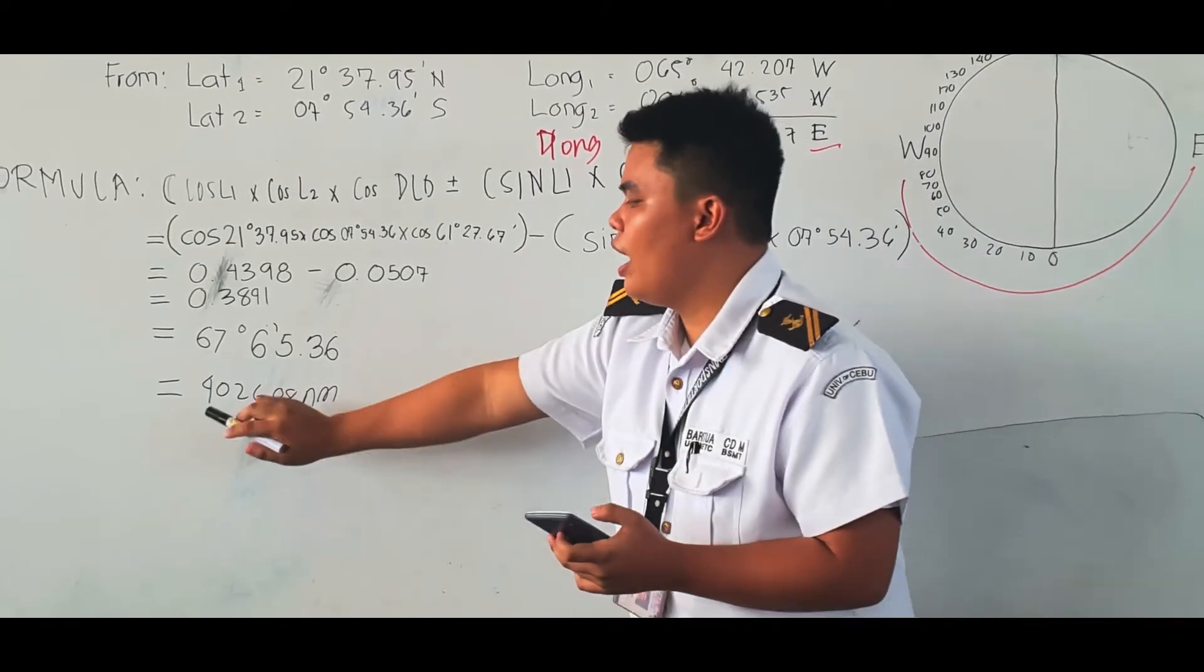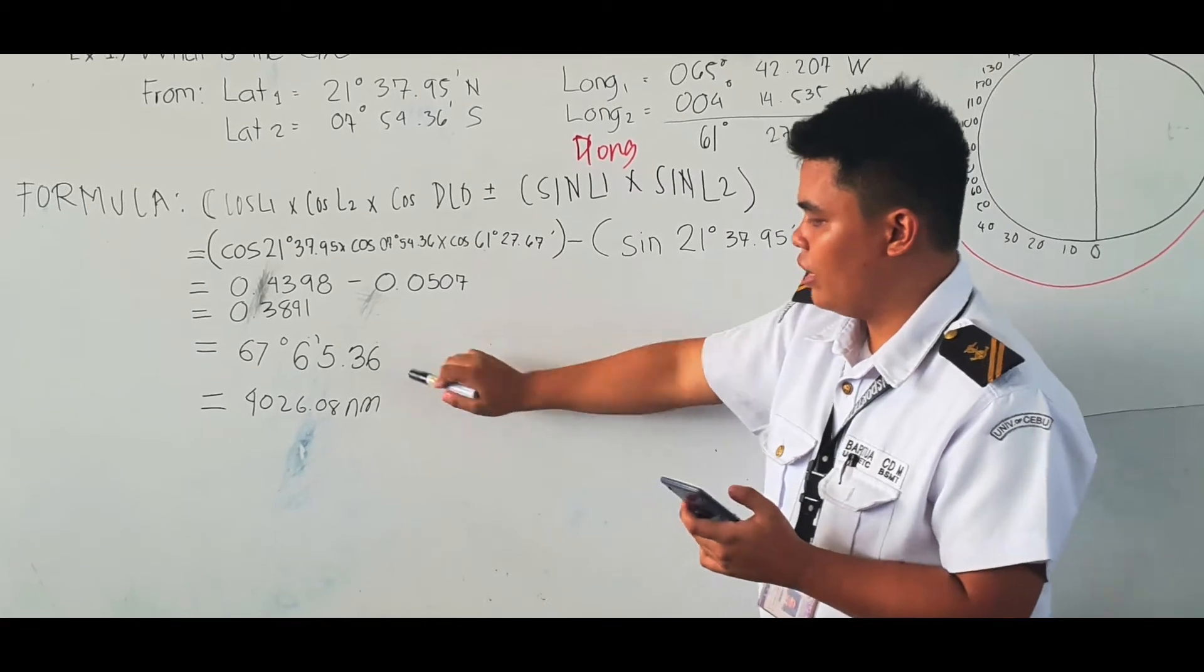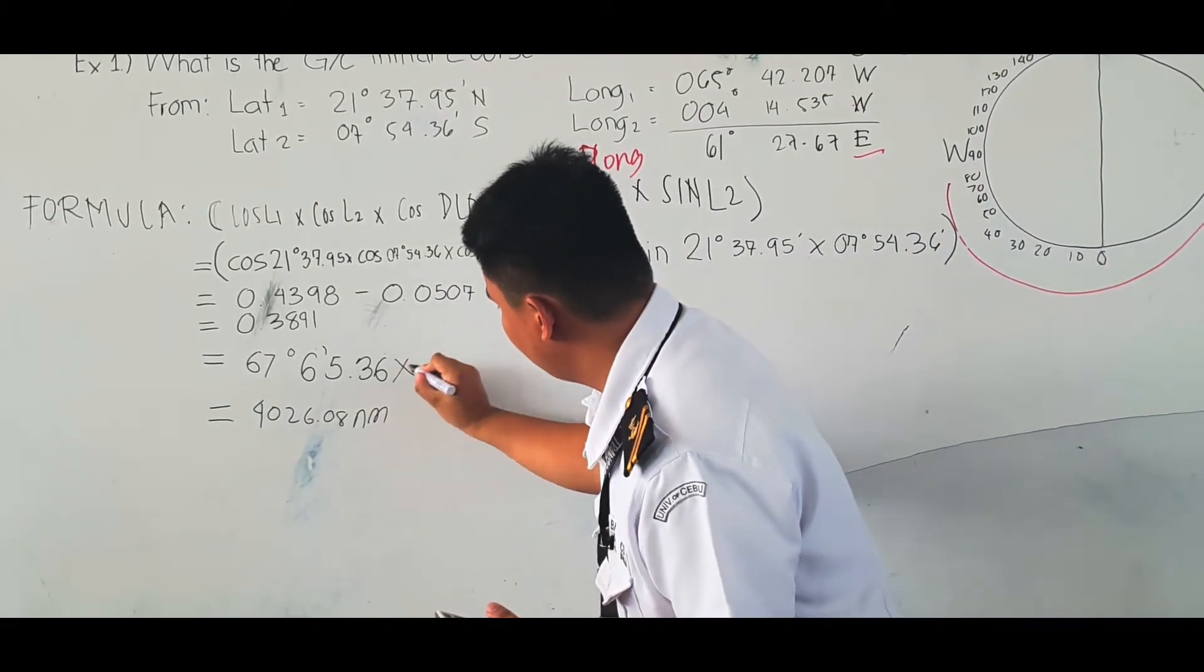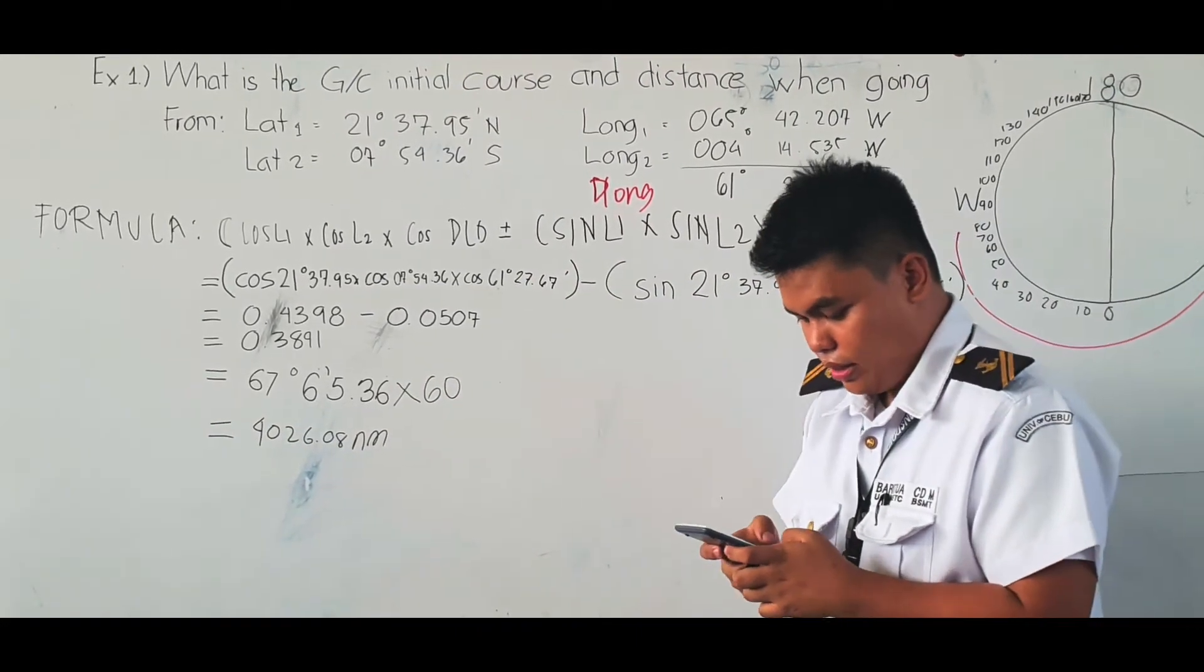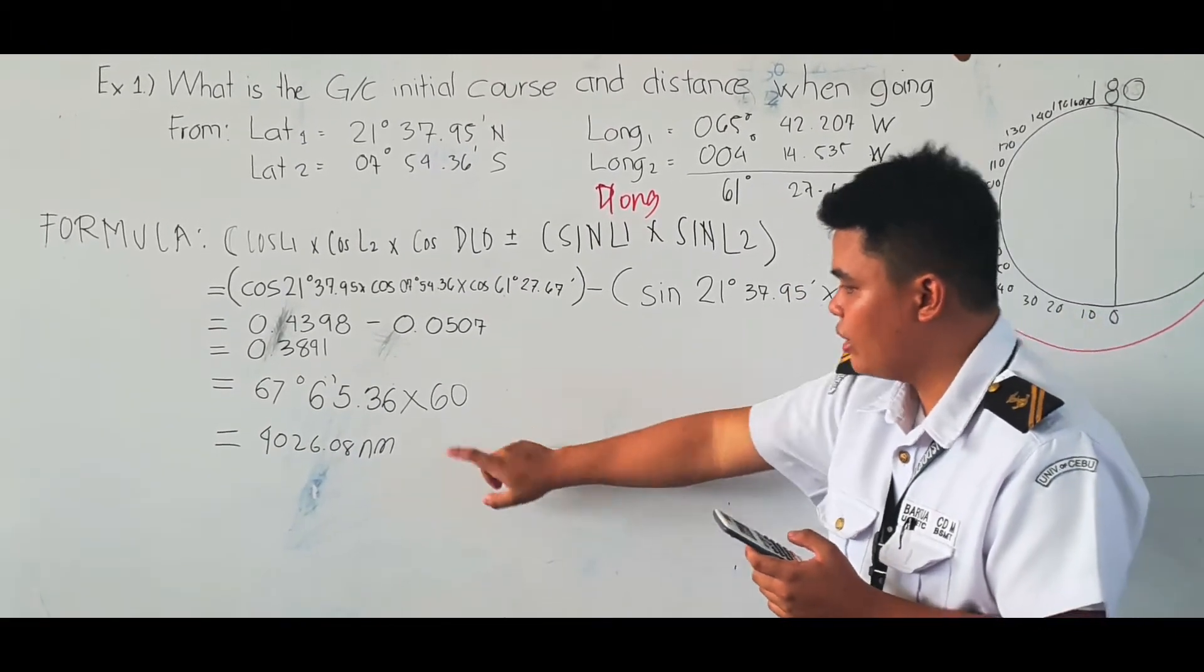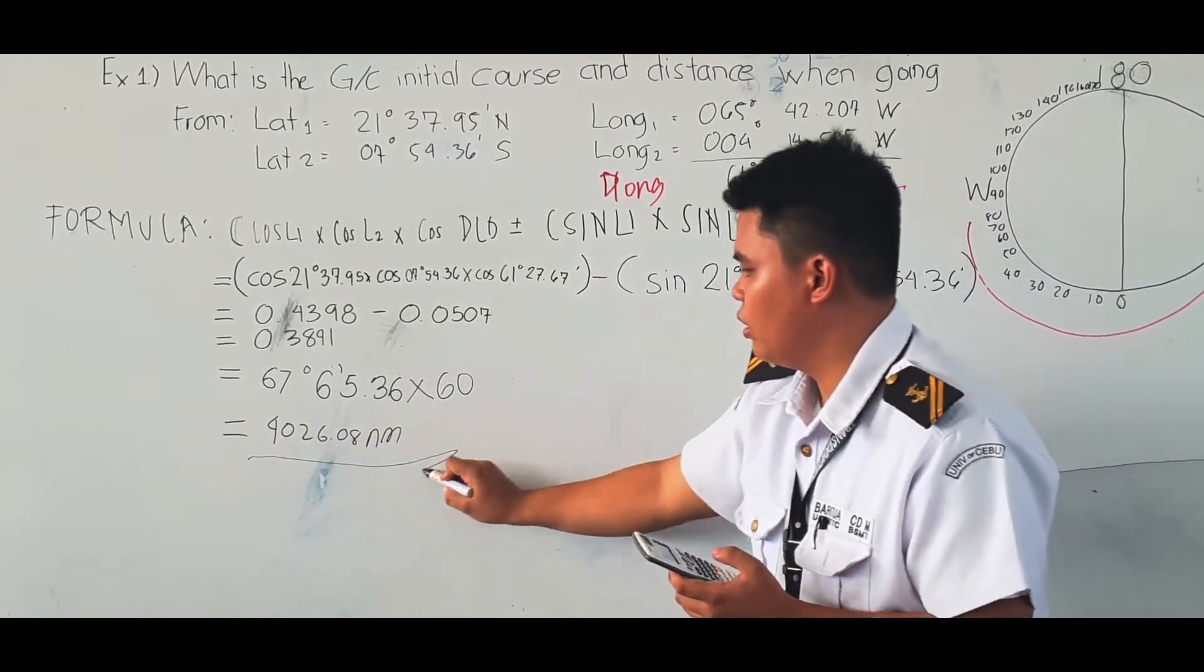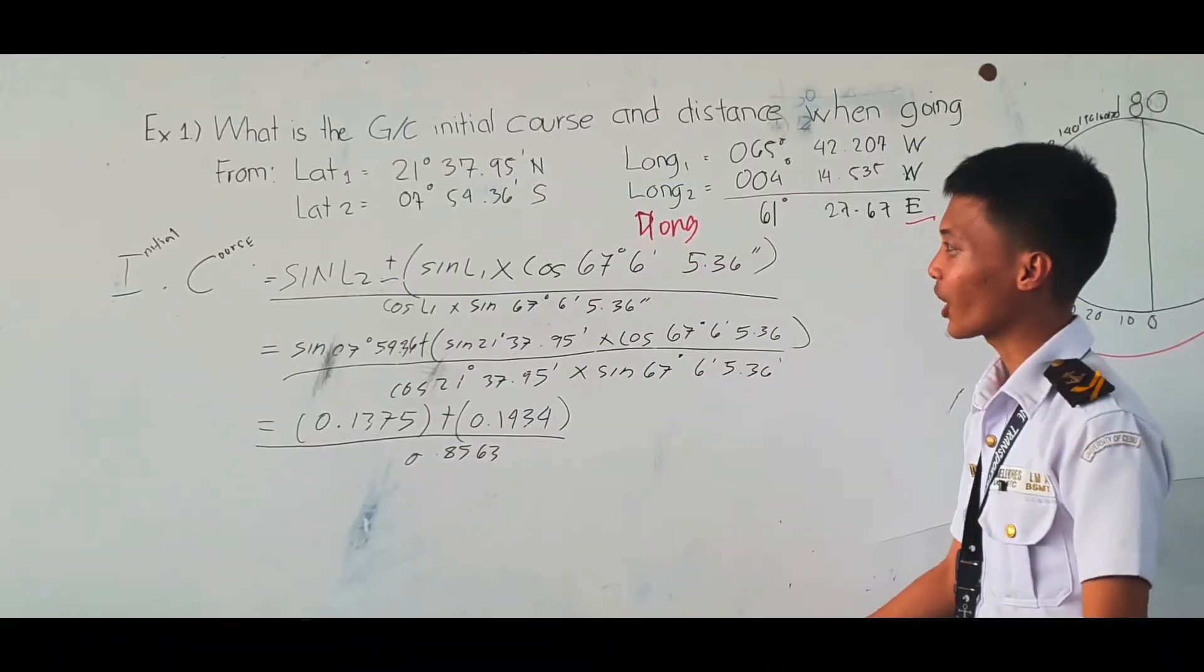To get the nautical miles, we must multiply this by 60. 67 degrees 6 minutes 5 seconds times 60, the product is this one. Try it with your calculator and check if it is correct.